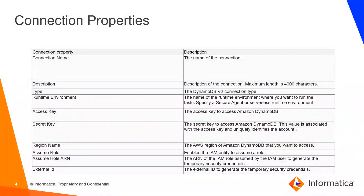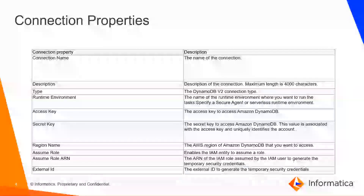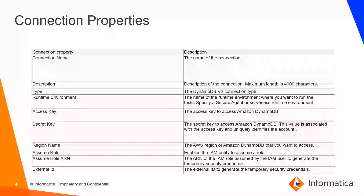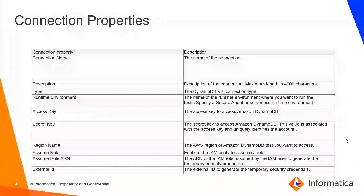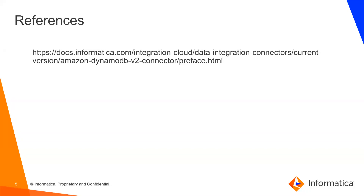If you don't have the DynamoDB P2 connector enabled, then you need to specify your runtime. Then you need to specify the access key and secret key. Access key and secret key are optional when you are using assumed roles from an IAM role. You can select the region name — the AWS region where the Amazon DynamoDB table is present — which you want to access when creating maps using the Amazon DynamoDB connector. You can also pass the assume role and assume role ARN details if you are using assume role. These are the connection properties needed for the Amazon DynamoDB connector. You can refer to this document to read more about the DynamoDB P2 connector.